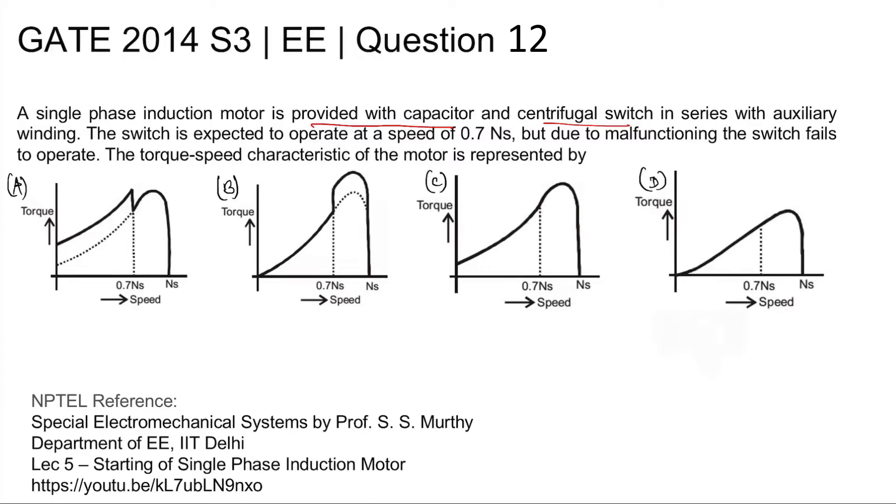The auxiliary winding is provided on the main winding to provide a starting torque.